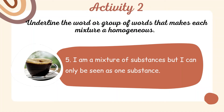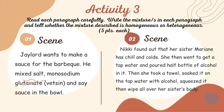For activity three, we have two paragraphs. We have to read them carefully and write the mixture in each paragraph, then tell whether the mixture described is homogeneous or heterogeneous. Scene one is about J Lord who wants to make a sauce for the barbecue. Scene two is about Nikki who found out that her sister Marian has chills and colds. Good luck!